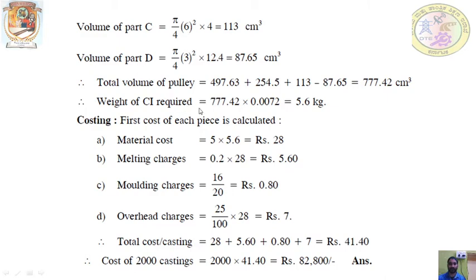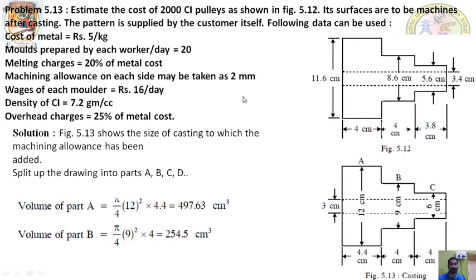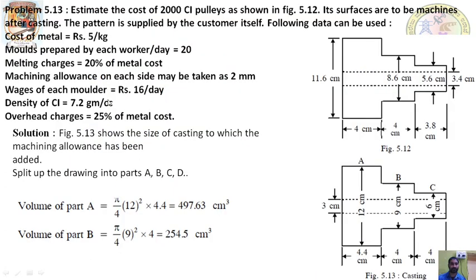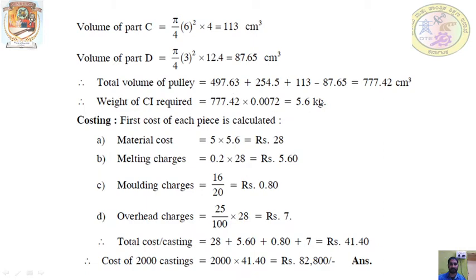The density of cast iron is 7.2 grams per cc, so mass = 772.42 × 7.2 / 1000 = 5.6 kg. The material cost is rupees 5 per kg and we require 5.6 kg, so material cost = 5 × 5.6 = rupees 28 per casting.